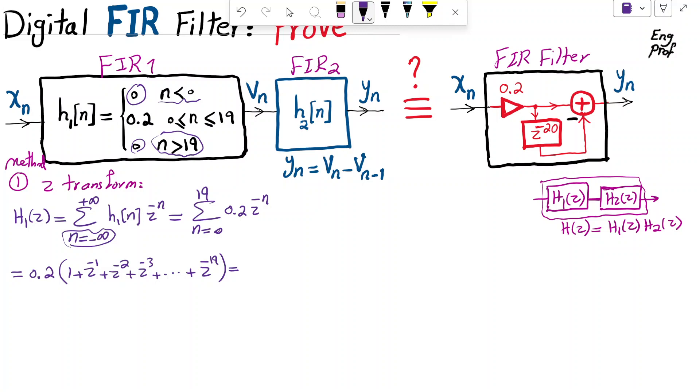Now, if I multiply both numerator and denominator by 1 minus Z minus 1, what I'm going to get is 1 minus Z minus 20 in numerator divided by 1 minus Z minus 1 in denominator. So that is H1 of Z. I found H1 of Z.